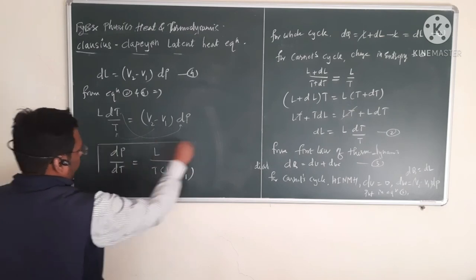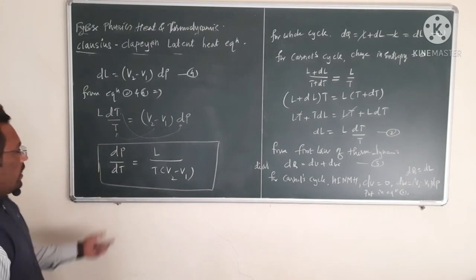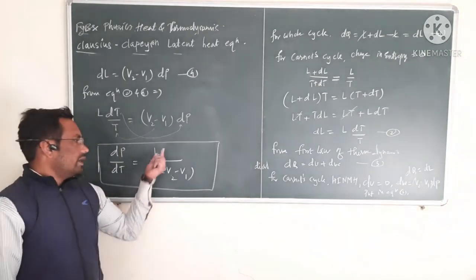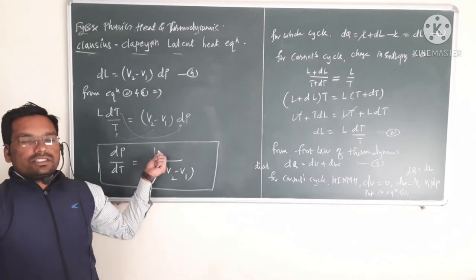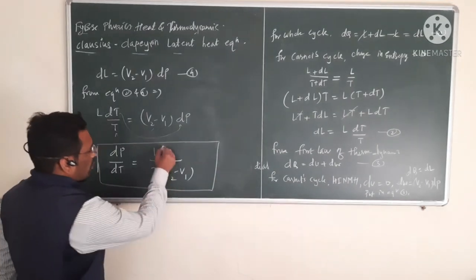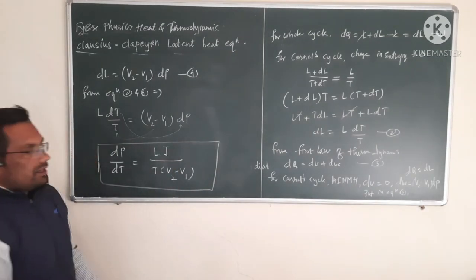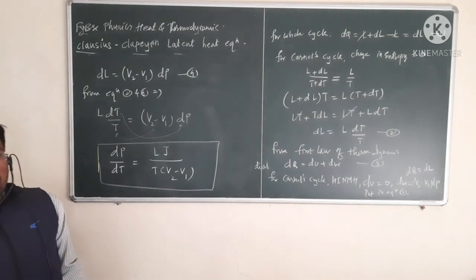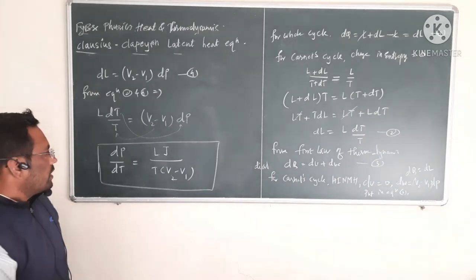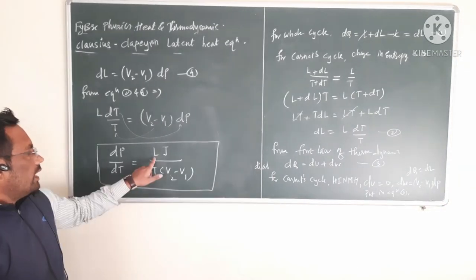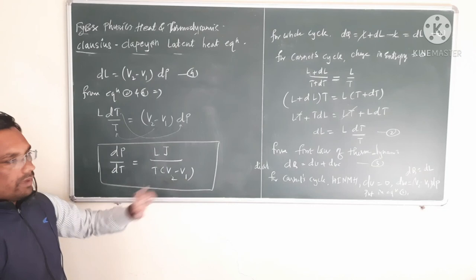Combining equations 2 and 4: L·dT/T = (V2 - V1)·dP, which rearranges to dP/dT = L / (T·(V2 - V1)). This is the first latent heat equation. If heat energy is taken in Joules, multiply by J (the mechanical equivalent of heat): dP/dT = L·J / (T·(V2 - V1)).